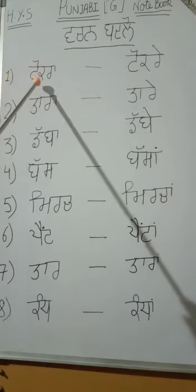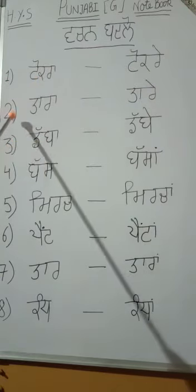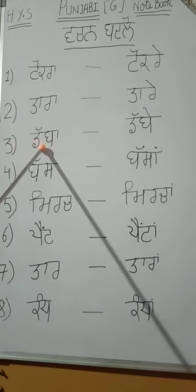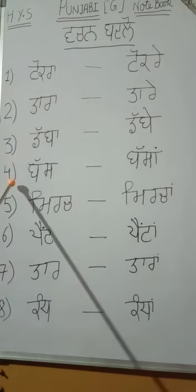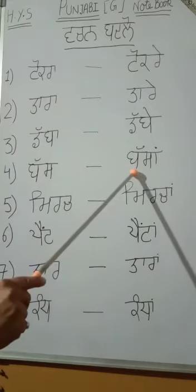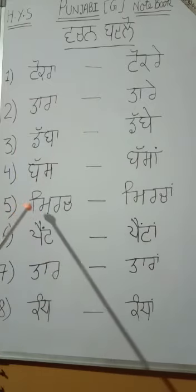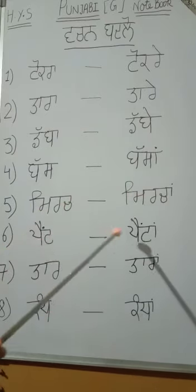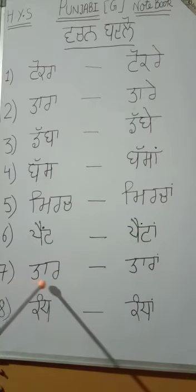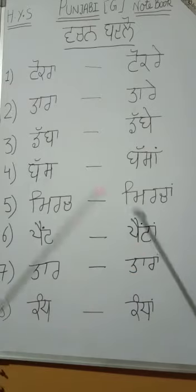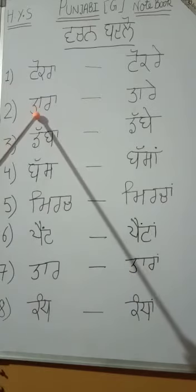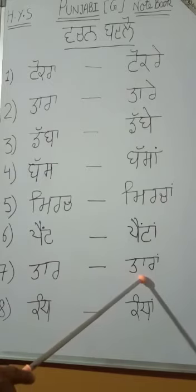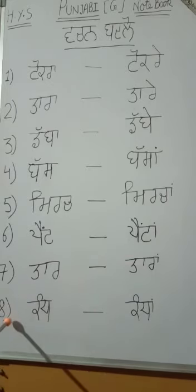Vachan Badalo. Number 1: write Tokra — Tokre. Number 2: write Taran — Tare. Number 3: write Dabba — Dabbe. Number 4: write Bas — Basan. Number 5: write Mirch — Mirchan. Number 6: write Pant — Pantan. Number 7: write Tar — Taran.